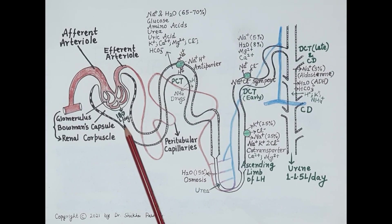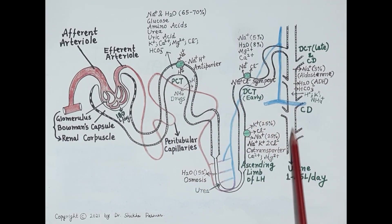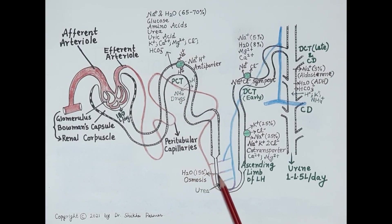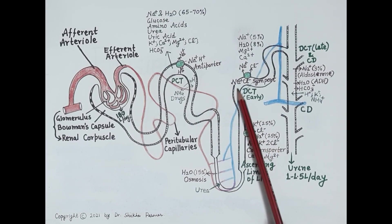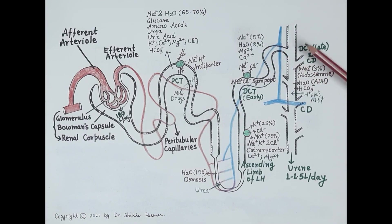Out of 180 liters of filtrate, only 1 to 1.5 liters of urine is produced — meaning 99 percent of the filtrate is reabsorbed at different sites. In the proximal convoluted tubule, 65 to 70 percent of sodium and water is reabsorbed. In the descending loop of Henle, 15 percent of water is reabsorbed. In the ascending limb of the loop of Henle, around 25 percent of sodium is reabsorbed. In the early distal tubule, around 5 percent of sodium and 8 percent of water is reabsorbed.